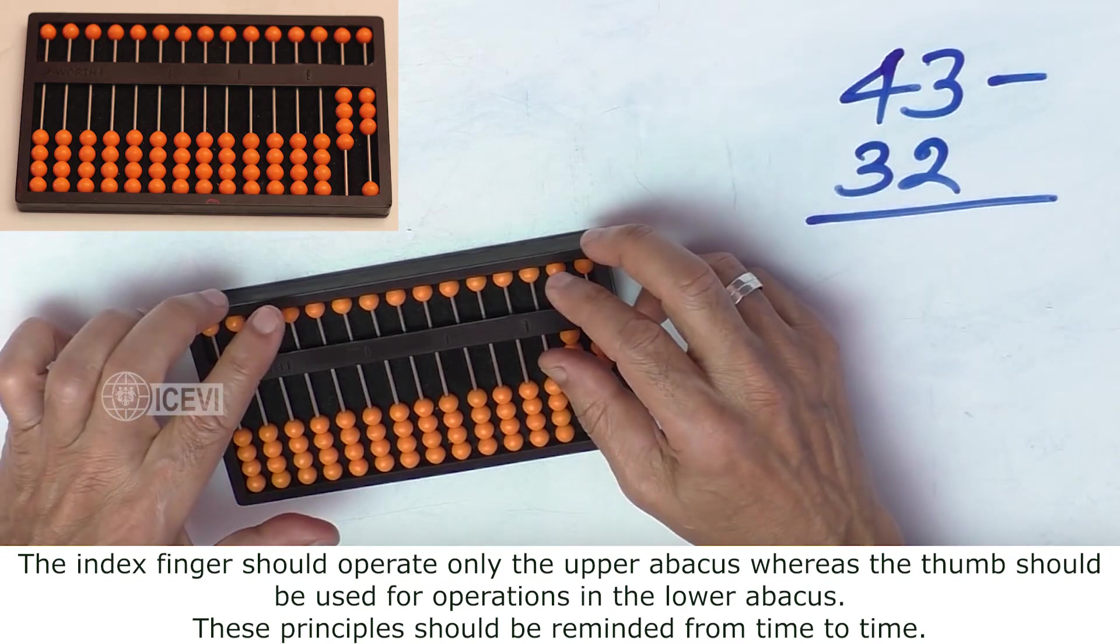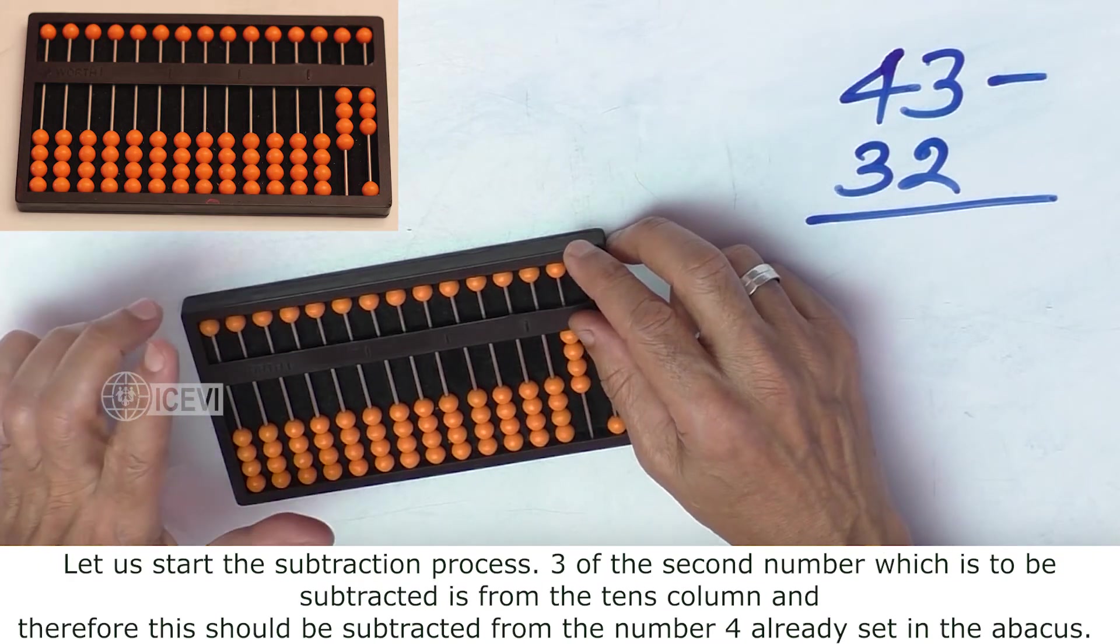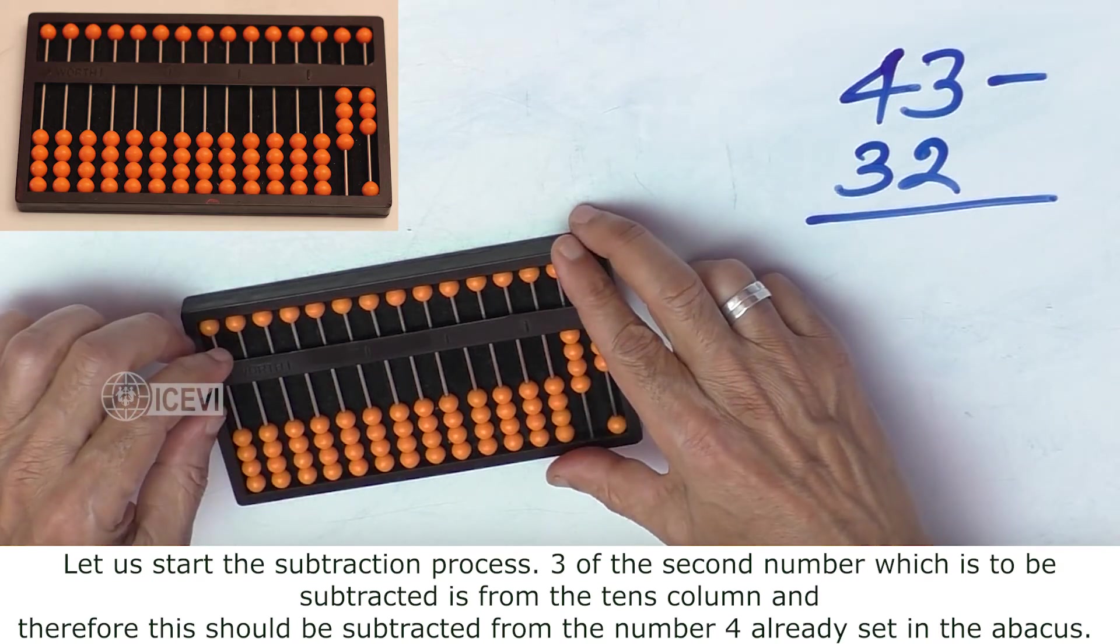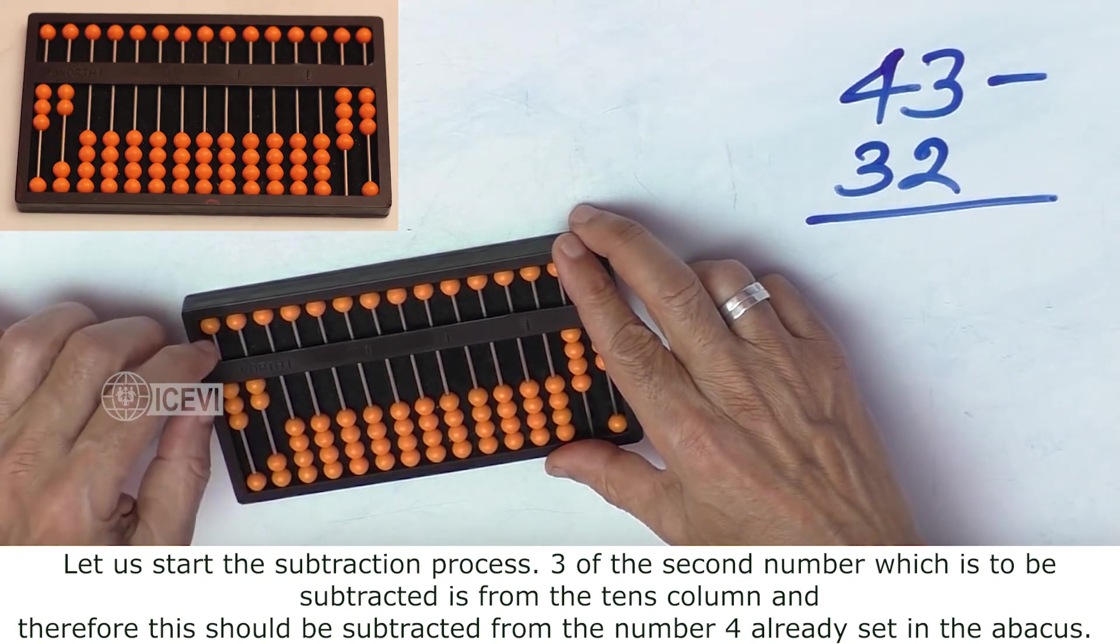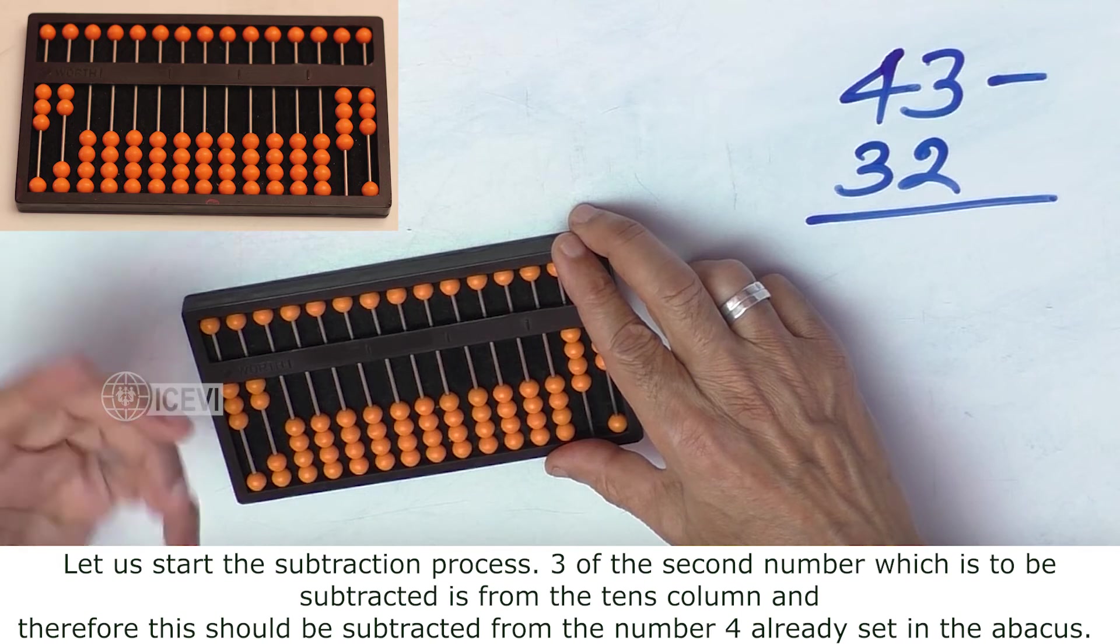These principles should be reminded from time to time. Let us start the subtraction process. As mentioned, if you want the 32 for reference, you can set in the left side of the Abacus. Or otherwise, if the child is able to remember by memory, that's fine.